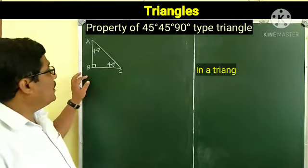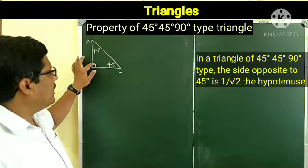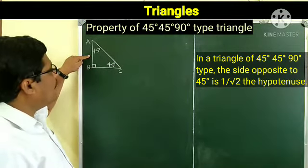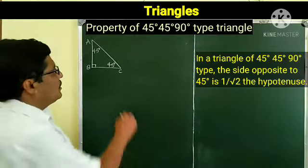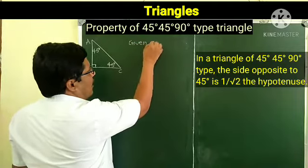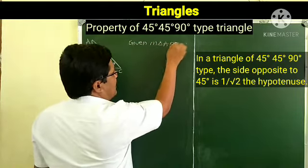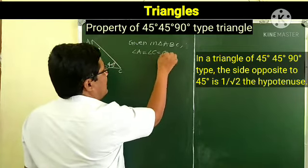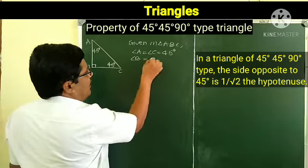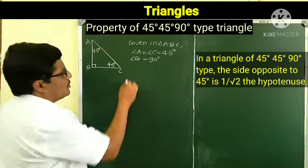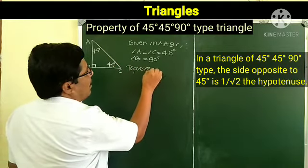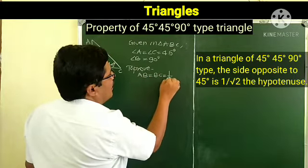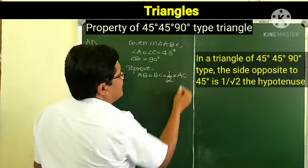Now we learn the property of the 45-45-90 triangle. The side opposite to 45 degrees is 1 upon root 2 times the hypotenuse. Given in triangle ABC: angle A equals angle C equals 45 degrees, angle B equals 90 degrees. We have to prove AB equals BC equals 1 upon root 2 times the hypotenuse AC.